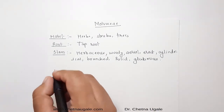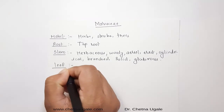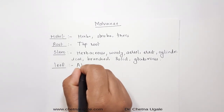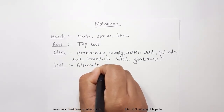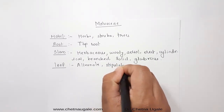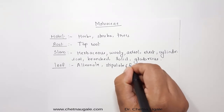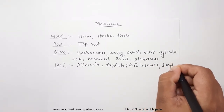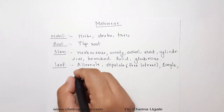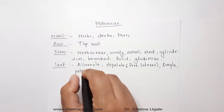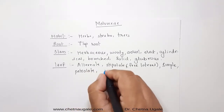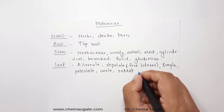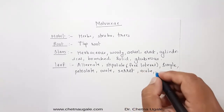The next one is the leaves. The leaves of the plants are typical simple leaves, and the phyllotaxy is alternate. It consists of free lateral stipules. The leaves are simple and petiolate. The shape of the leaf is ovate, the margin is serrate, the apex is acute, and the venation is reticulate.